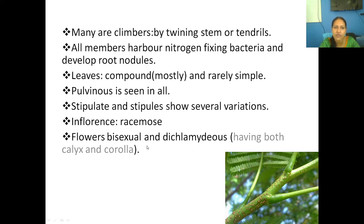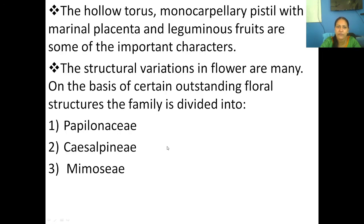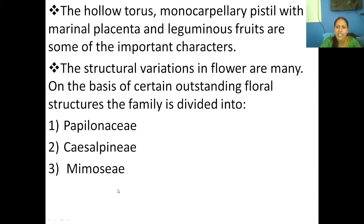Inflorescences are usually racemose type. The flower is bisexual and dichlamydous, meaning they have both calyx and corolla. The gynoecium part is monocarpellary with marginal placentation, and the fruit is a legume. The family is divided into three subfamilies — PCM: Papilionoideae, Caesalpinioideae, and Mimosoideae.